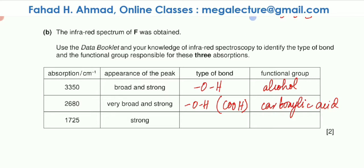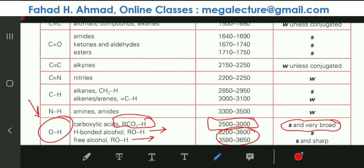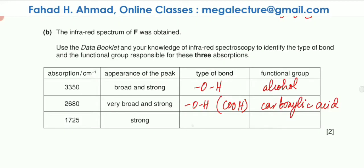The last absorption is a strong peak at 1725 cm⁻¹. This is a very unique wave number — it corresponds to a C=O bond. At 1725 this probably belongs to a carboxylic acid, since a carboxylic acid always has a C=O bond. So we're getting close to identifying the molecule.